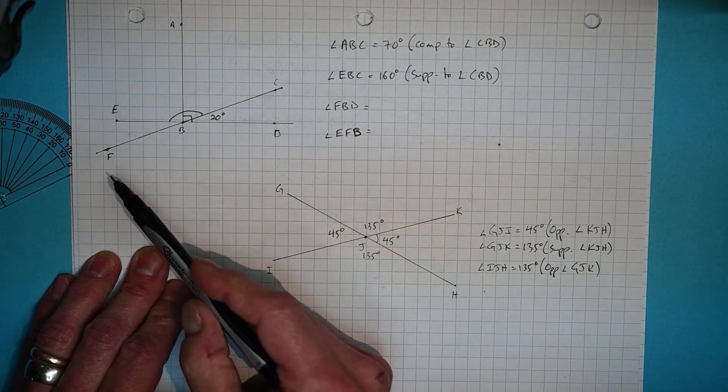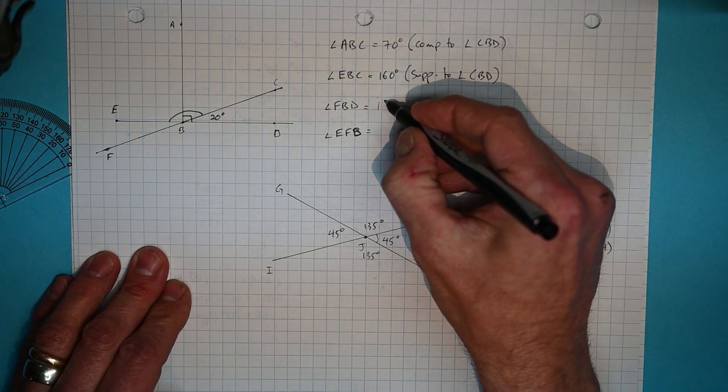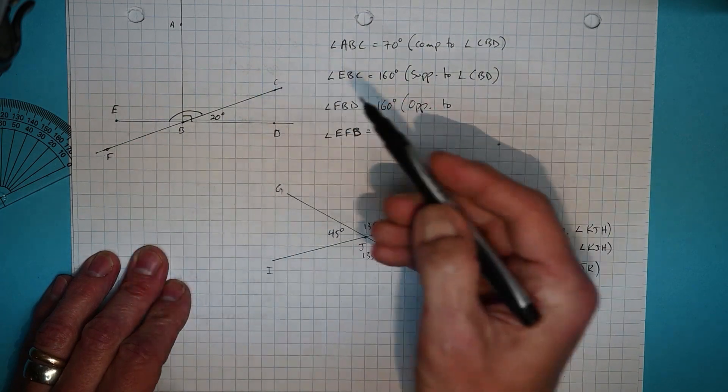EBC is 160. And you might have noticed FBD is simply opposite to it. So it is also 160 degrees because it is opposite to EBC.